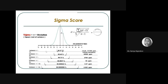The sigma levels and their defect rates are: one sigma — 68.27% quality, 317,300 defects per million; two sigma — 95.45%, 45,500 DPM; three sigma — 99.73%, 2,700 DPM; four sigma — 99.9933%, 63 DPM; five sigma — 99.99943%, 0.57 DPM; six sigma — 99.9999998%, 0.002 DPM.